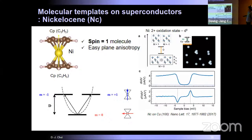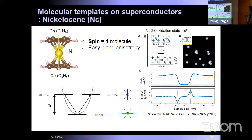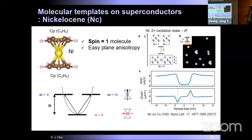The nickelocene molecule has cyclopentadienyl rings binding two rings together with a central nickel atom. The nickel atom has a 2+ oxidation state with a D8 configuration, leaving two unpaired electrons making a spin-1 system. When placed on a surface, one cyclopentadienyl ring binds to the surface, creating a donut-shaped STM image from the dxz and dyz orbitals. This molecule has easy-plane anisotropy: the ground state is M=0 and the excited states are M=±1, giving an IETS step at around 3.8 meV on Cu(100) surface.